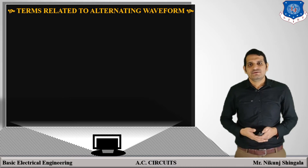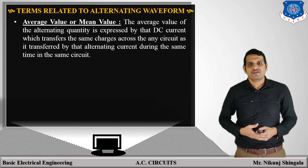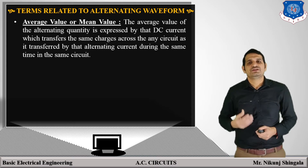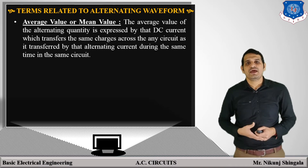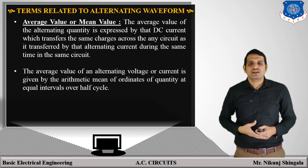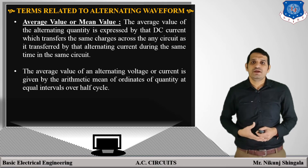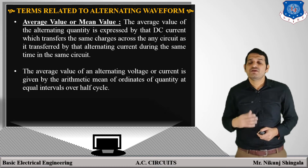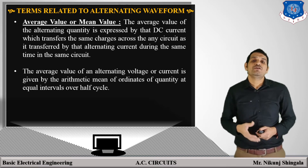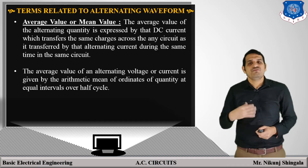Let us start with the average value. Average value or mean value of alternating quantity is expressed by the DC current or voltage which transfers the same charge across any circuit as it is transferred by alternating current during the same time in the same circuit. The average value is given by the arithmetic mean of the alternating quantity at equal intervals over the half cycle. For a symmetrical wave, average value is calculated over the half cycle because the average value of a symmetrical waveform over the full cycle is zero, since positive and negative cycle values are equal and opposite.